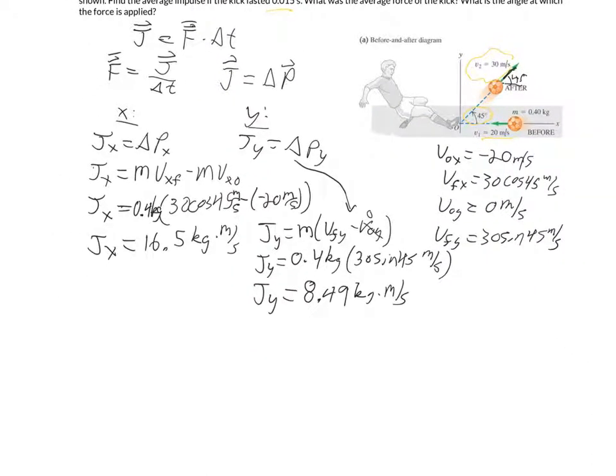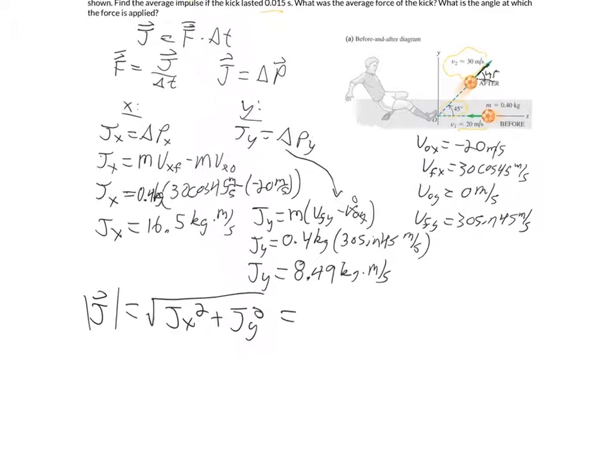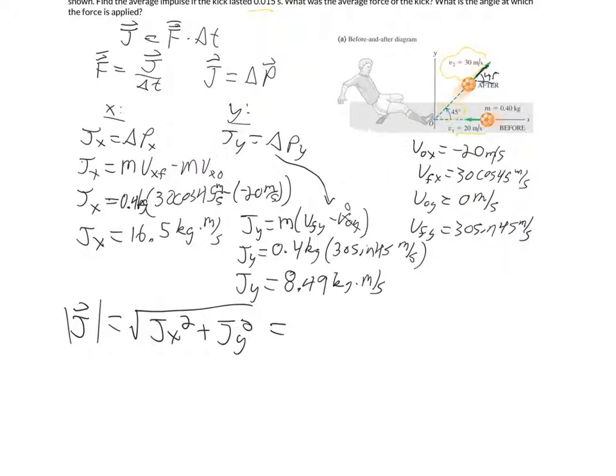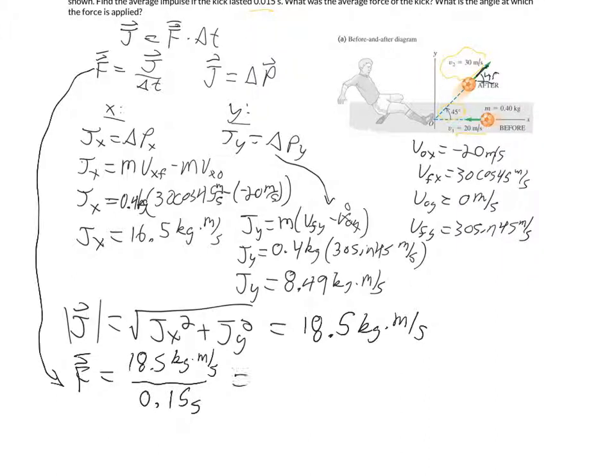So if we want to find the average force, we first need to find the overall impulse. The magnitude of the impulse is going to be the square root of the x component squared plus the y component squared. Taking 16.5 squared plus 8.49 squared and take the square root, it should come out to be equal to approximately 18.5 kilograms times meters per second. And then our average force should be equal to 18.5 kilograms times meters per second, divided by the time of 0.15 seconds. So doing the math, the average force should come out to be equal to 1,240 newtons.